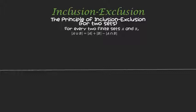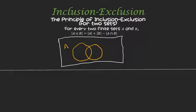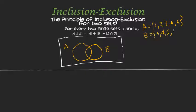Think of this — it helps to draw Venn diagrams. So I have my set A and my set B. Let me make that a bigger intersection because we'll have to think about that. Let's give ourselves an example. Let A be the set {1, 2, 3, 4, 5} and B be the set {3, 4, 5, 6, 7, 8}.